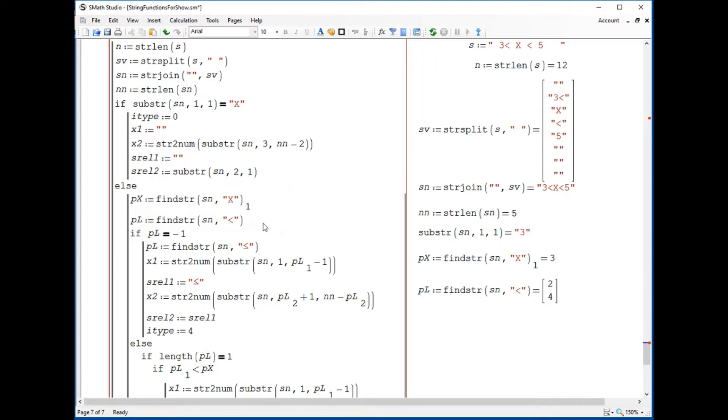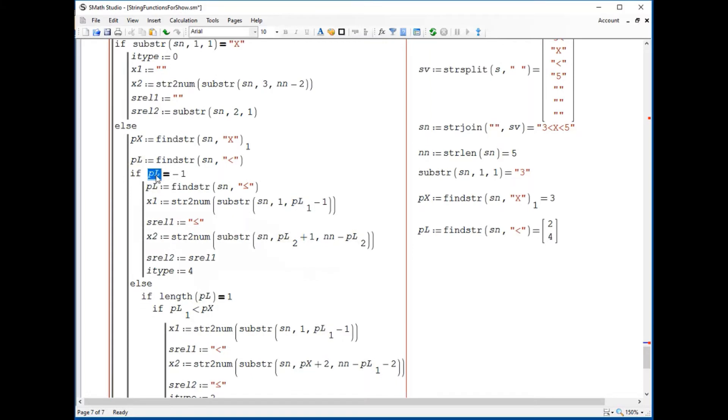And so the next if says, okay, if pl is equal to minus 1, this would be the case only if there is not a less than symbol in the string. So that is not the case, we go to here.